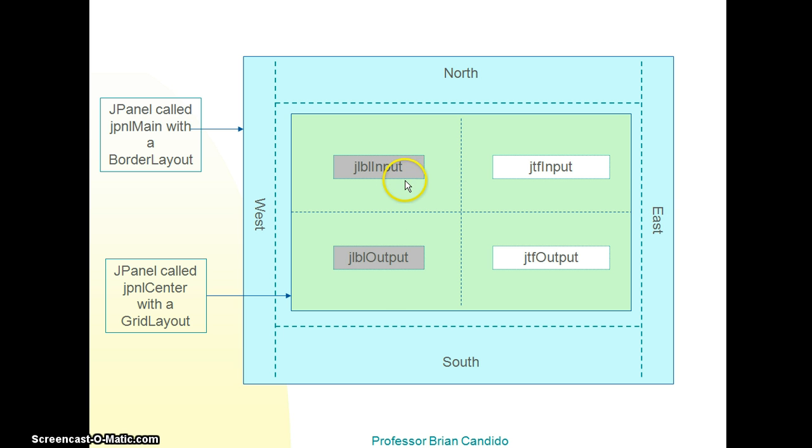Then we're going to add a JLabel called input to this area of the center. And a JTextField called input here. And then we're going to have another JLabel called output here. And a JTextField called output here. And we add it to the center.